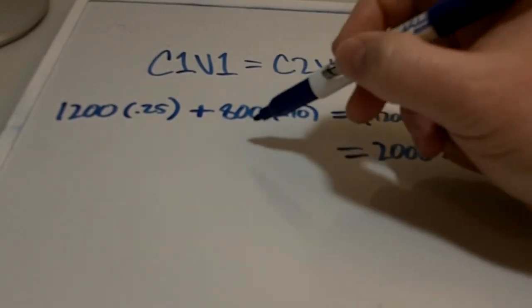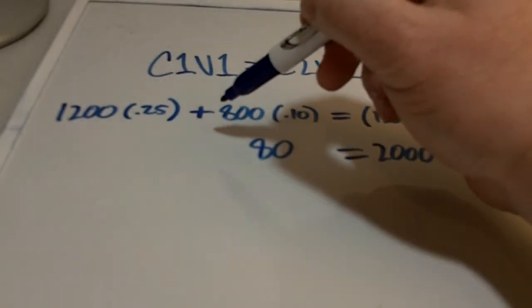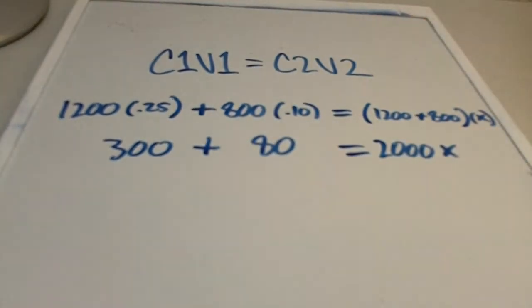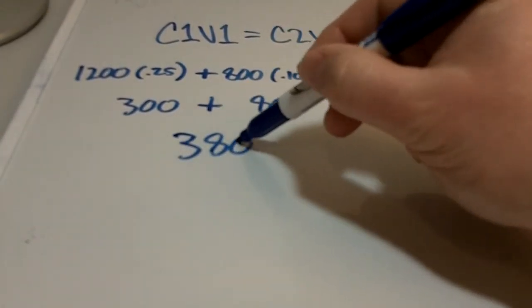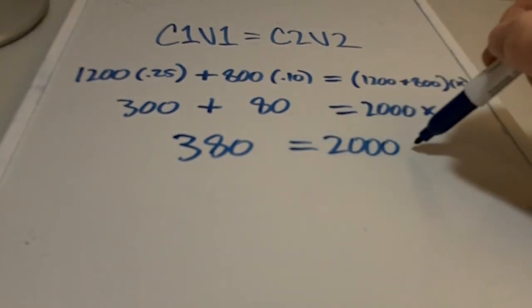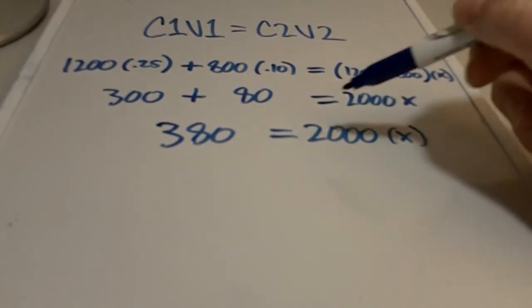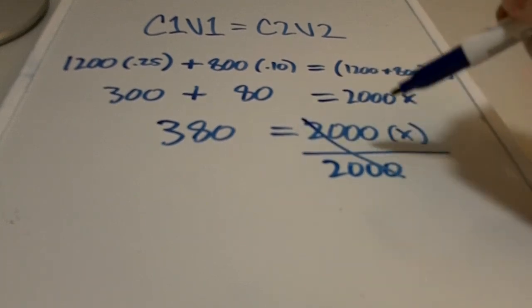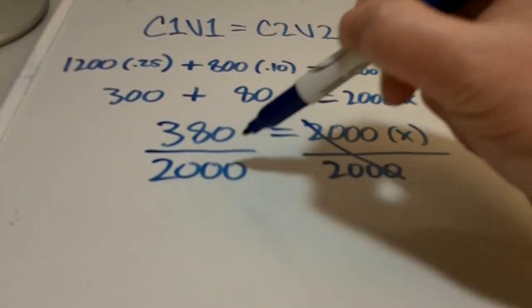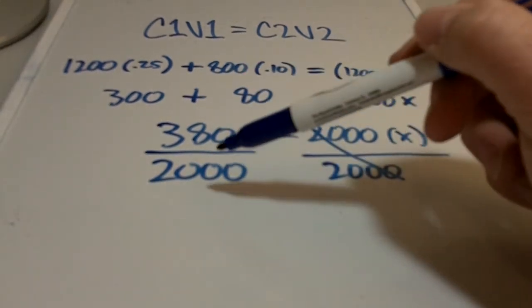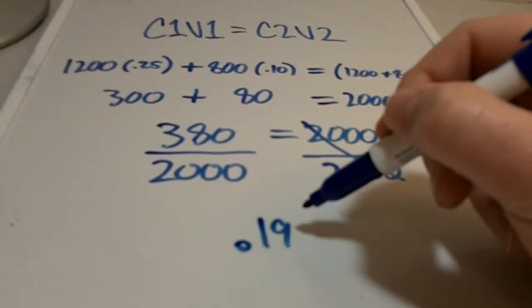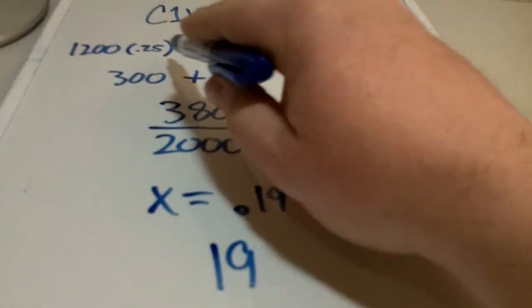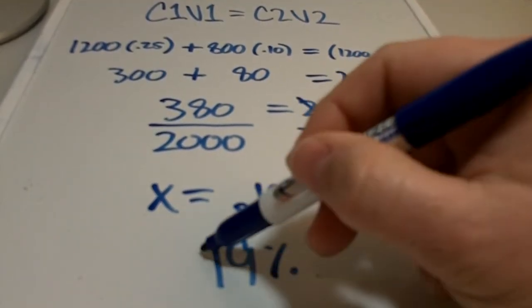So over here, we know we're going to have 2,000x. And then over here, 800 times 0.10 is 80. 1,200 times 0.25 is 300. So then what we got is 380 equals 2,000x, dividing by 2,000. So we can isolate this x because these are going to cancel. And 380 divided by 2,000 is 0.19. So x equals 0.19. So adding these together would give us a 19% solution.